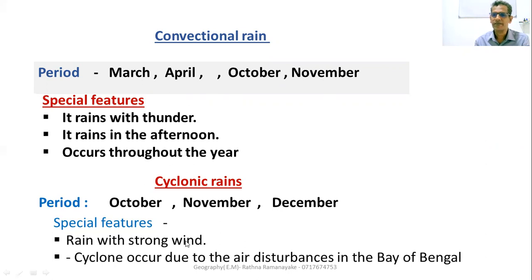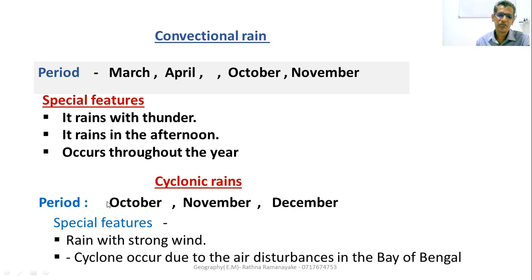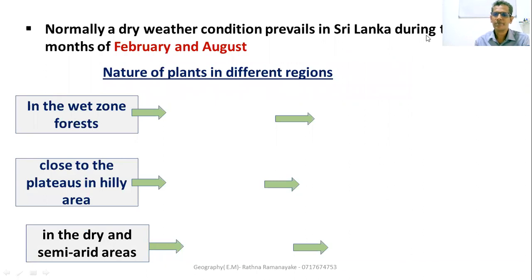Cyclonic rain — rain with a strong wind. Cyclones occur due to air disturbances in the Bay of Bengal. It rains with strong wind during the period of October, November, and December. Normally, a dry weather condition prevails in Sri Lanka during the months of February and August.